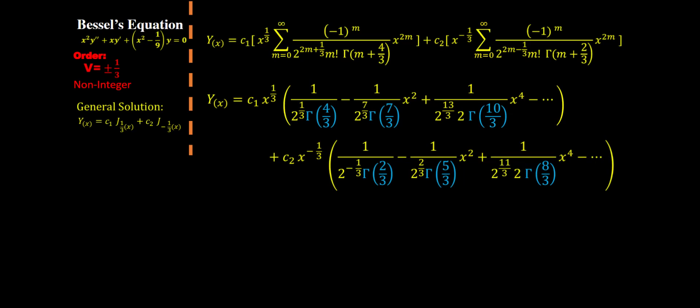So to continue we arrive to the point where we need to deal with these weird little thingies right here. They are called the gamma functions. Now to deal with these we have two different ways.